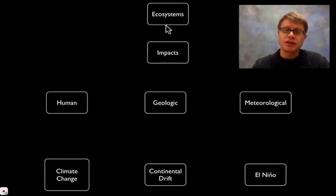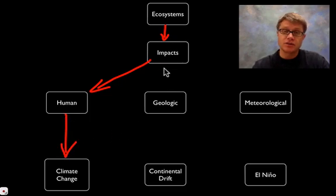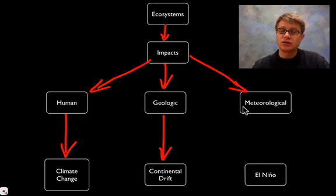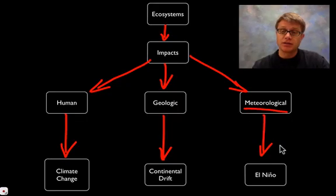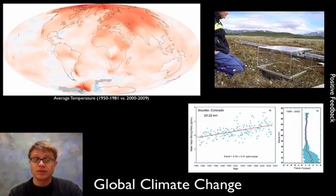In this podcast I'm going to talk about how ecosystems can be impacted by changes in their environment. Some of those are human changes, such as global warming or climate change. We could also have geologic changes — an example is continental drift. And finally we could have meteorological changes, meaning weather changes, such as El Niño, a warming of the oceans, and how that's impacting ecosystems on our planet.